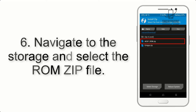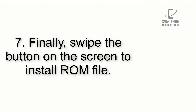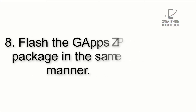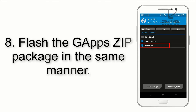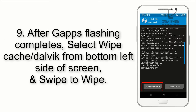Step 6: Navigate to the storage and select the ROM zip file. Step 7: Finally, swipe the button on the screen to install the ROM file. Step 8: Flash the GApps zip package in the same manner.